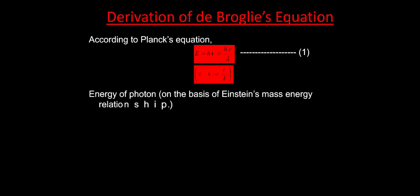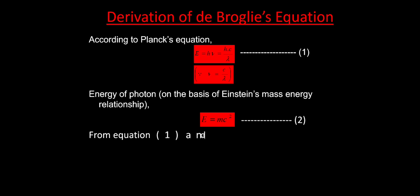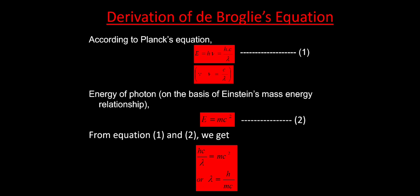The energy of a photon on the basis of Einstein's mass-energy relationship — which is E equals mc squared — let us take that as equation 2. From equations 1 and 2 we get: h c by lambda equals m c squared, and simplifying gives lambda equals h by mc.